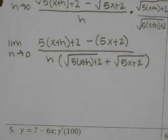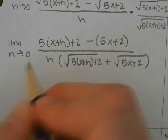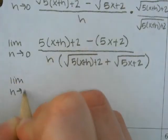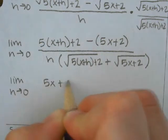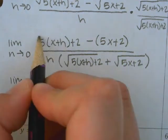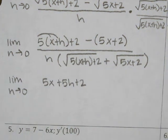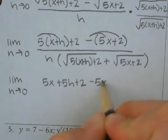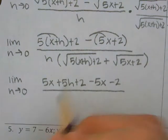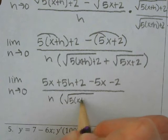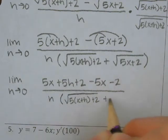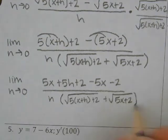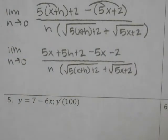So what do we do now? We want to get rid of those parentheses. So I have 5x + 5h + 2 — that's when I distribute this 5 — and then I have minus 5x minus 2. Are you guys noticing how repetitive these conjugate problems are? They are very similar every single time.